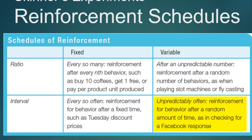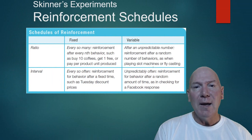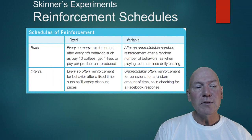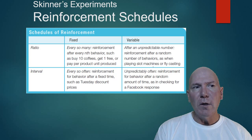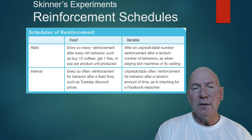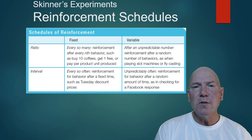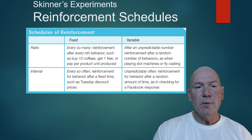A variable interval means reinforcement comes after a random, unpredictable amount of time — like checking your Facebook responses. You post something and check periodically, not knowing when replies will come, so it's unpredictable. With ratio schedules, your actions drive the outcome — it's how many times you do something. With interval schedules, reinforcement happens at a certain time, predictable or not, regardless of how many actions you've taken.